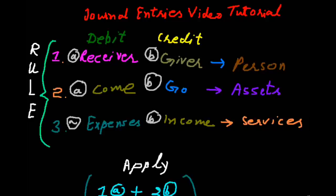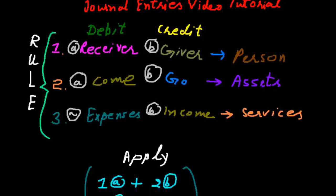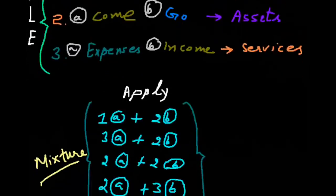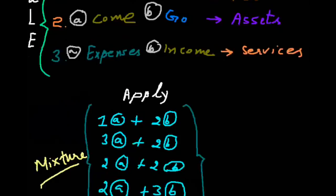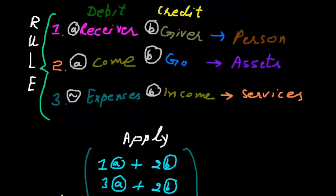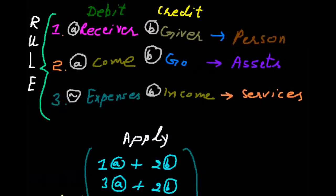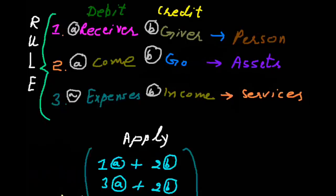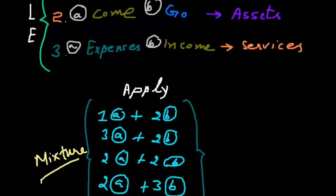So on these rules we pass journal entries. These rules apply with a mixing formula. Suppose the first formula applies plus the second formula applies together — I can explain it with an example.